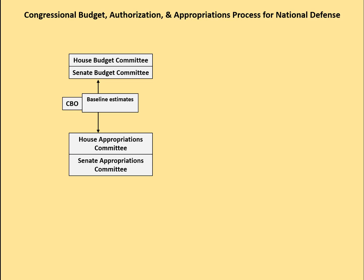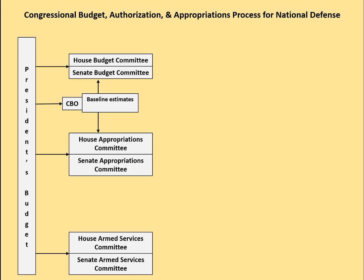Those estimates are shared with the budget committees and the appropriations committees. Then the president's budget comes over to Congress and is sent essentially to four places: the budget committees, the Congressional Budget Office, the appropriations committees, and each of the authorizing committees. There are multiple authorizing committees within Congress who have subject matter expertise in the functioning of programs within all the various agencies.